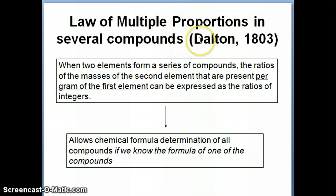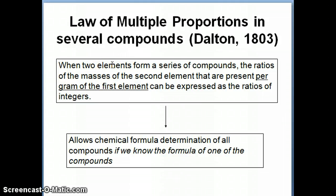This was a law that Dalton himself came up with. What he discovered was that when you have two different elements — for example, carbon and oxygen, nitrogen and oxygen, or copper and oxygen — you can have some combination of two or more elements forming a series of compounds. Two elements forming compounds is the simplest case.